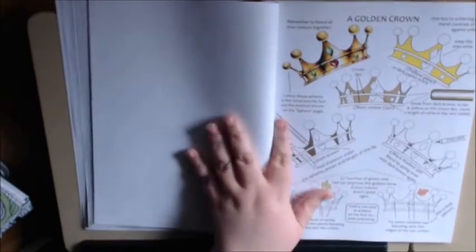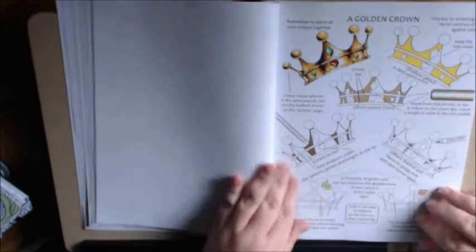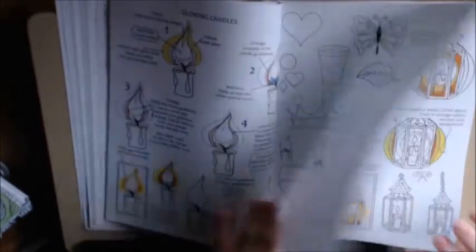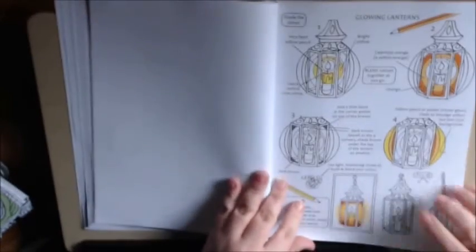How to do the different types of gold crowns. Another practice page. Oh, and lighting. We all have those glowing lights and candles everywhere. I really use that. The lanterns.